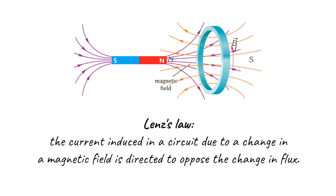Lenz's Law states that the current induced in a circuit due to a change in a magnetic field is directed to oppose the change in flux. So it means if the flux is increasing the induced field must decrease it, and if the flux is decreasing the induced field must increase the flux.